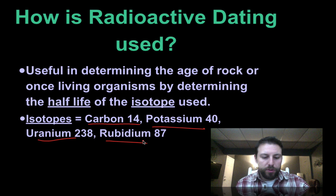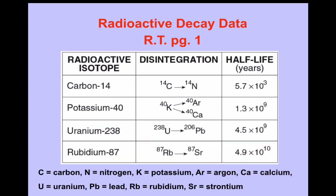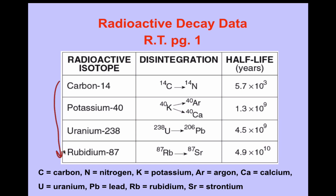Here on page one of our science reference table you can see the different radioactive isotopes we're going to be looking at, what they break down into — so carbon-14, for example, breaks down into nitrogen-14 — and how long it takes for that material to break down. Times 10 to the third means thousands; times 10 to the ninth means billions.